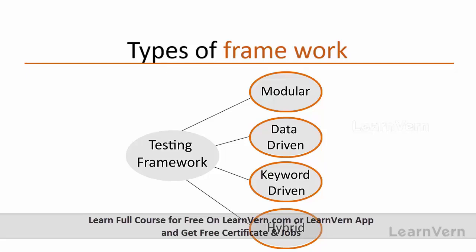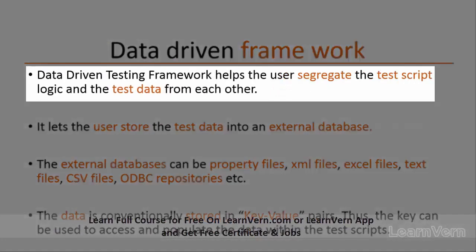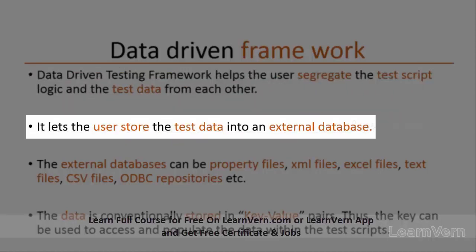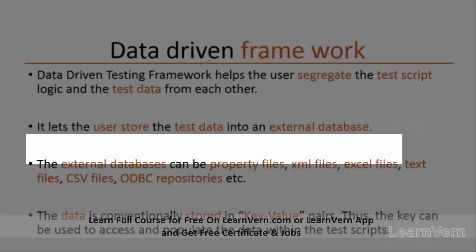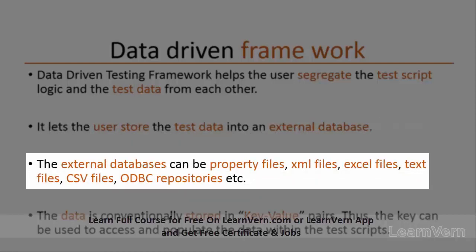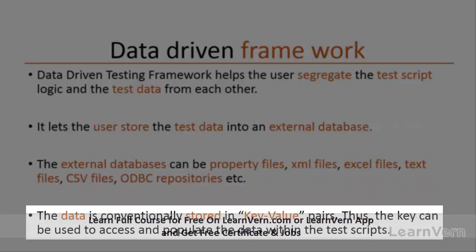First, we can see data-driven framework. In data-driven framework, basically the user script and data both are segregated and differentiated. Data can also be from an external database — any property file, XML, Excel file, text file, CSV file, or ODBC repository. Basically, the data is stored as key-value pairs, and we use the key to fetch the data in the script.